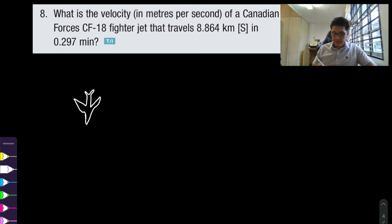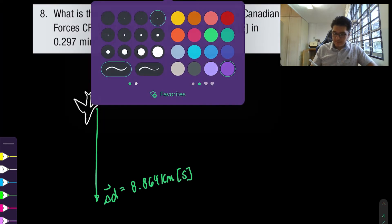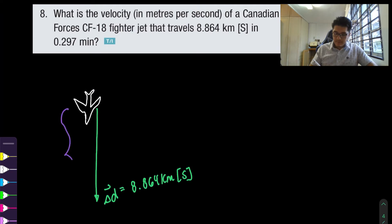Okay so we have a fighter jet, okay that's pretty exciting, and the fighter jet is traveling south at displacement of 8.864 kilometers south and it does this in a time interval of 0.297 minutes. So right away I remember this question was asking us to put it into meters per second so that kind of gives us a hint that we should be converting our units into meters and into seconds.